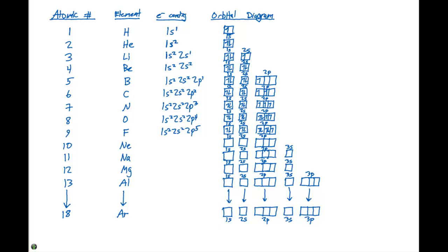For neon, which is our noble gas, we have ten electrons: 1s2, 2s2, 2p6. We completely fill up the 1s and 2s orbitals, and we need six electrons in the p block. Each of the individual p orbitals — px, py, and pz — contains two electrons for a total of six in that p orbital.